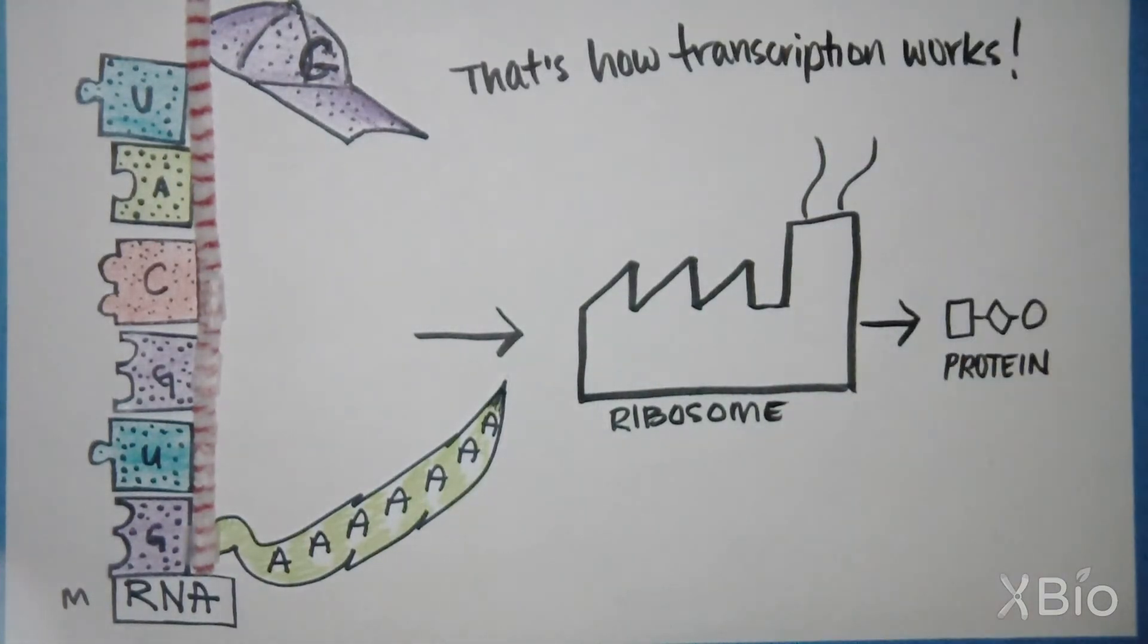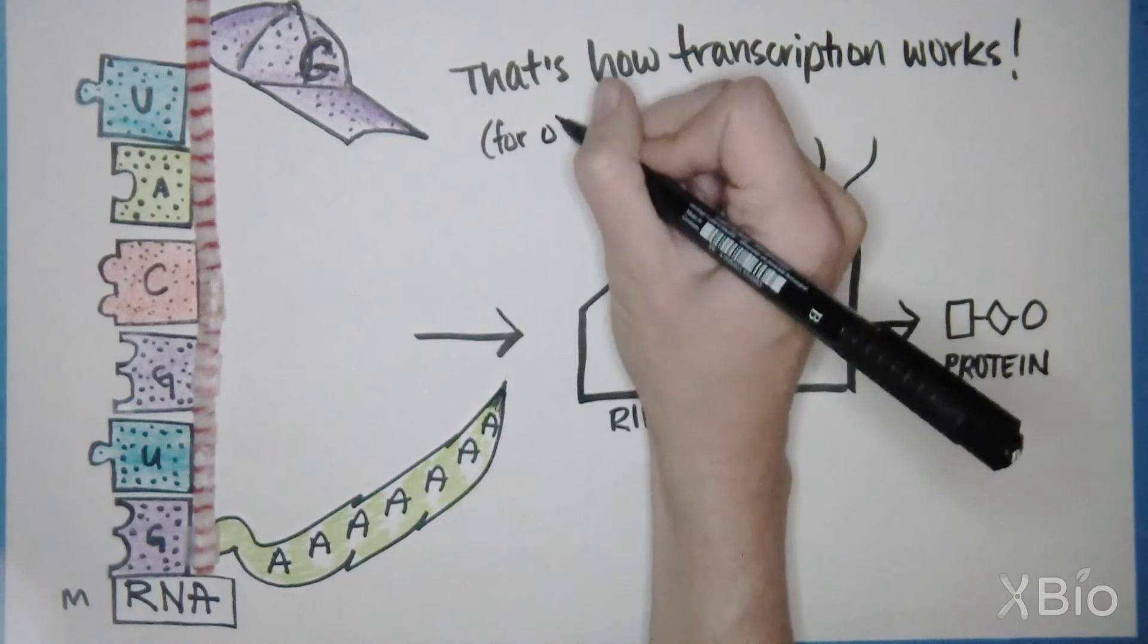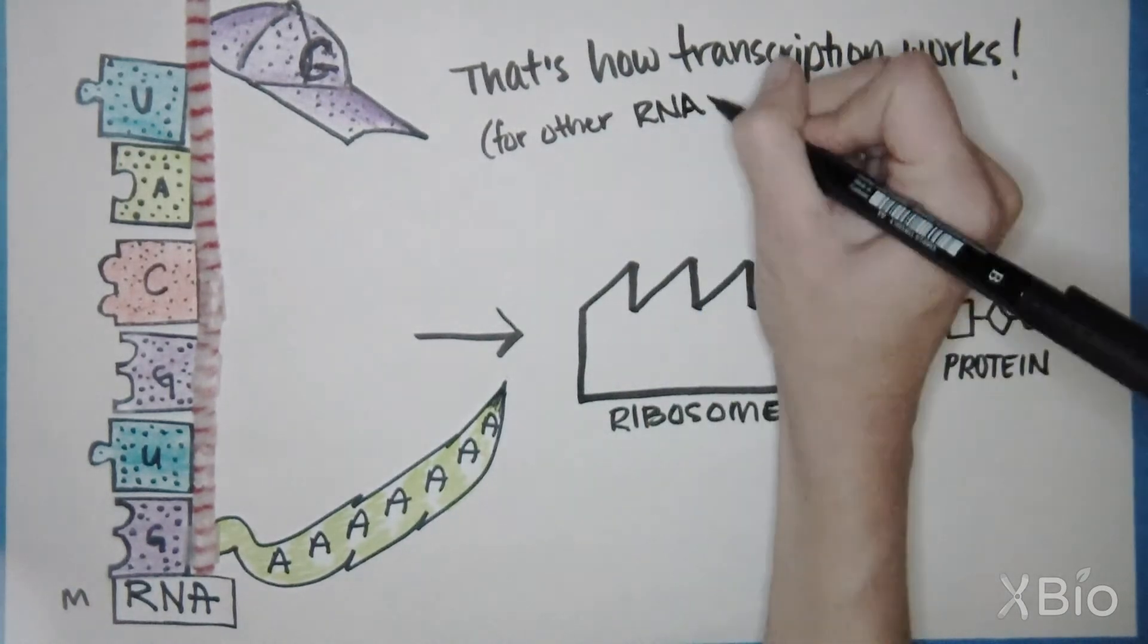That's how transcription works! In this sketch, we've focused on mRNA, which is used to make thousands of protein machines in your body. However, there are several other types of RNA that perform other useful tasks in the cell.